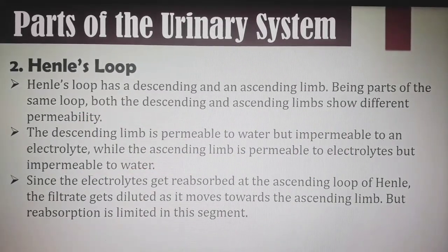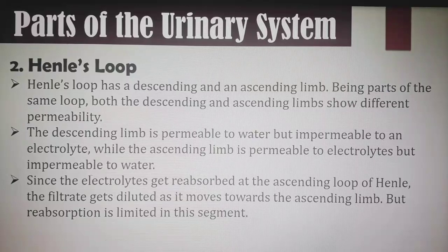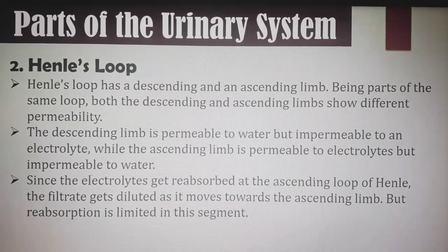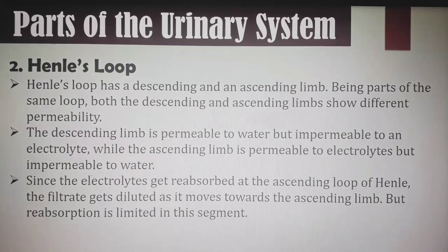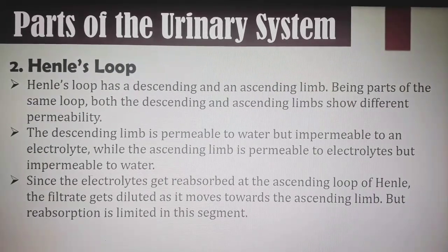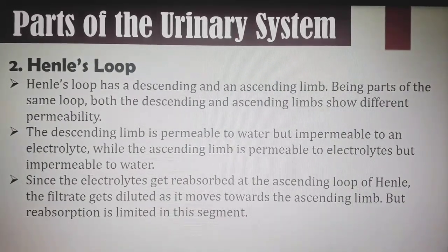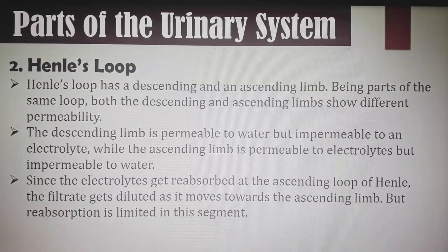Henle's loop has a descending and an ascending limb. Both limbs show different permeability. The descending limb is permeable to water but impermeable to electrolytes, while the ascending limb is permeable to electrolytes but impermeable to water. Since electrolytes get reabsorbed at the ascending loop of Henle, the filtrate gets diluted as it moves toward the ascending limb, but reabsorption is limited in this segment.